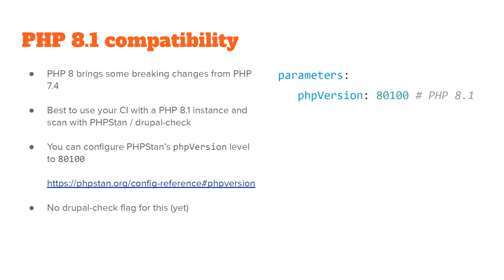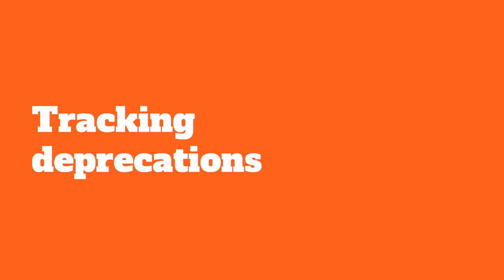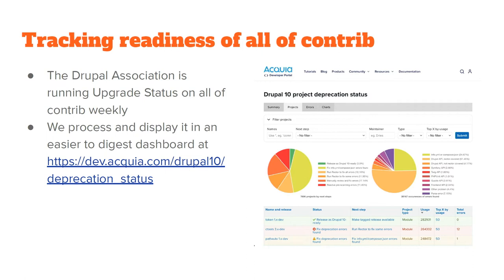For tracking deprecations, we always wanted to know how does the Drupal ecosystem do. The Drupal Association is running Upgrade Status on all contributed projects — thousands of them — every week. It produces an incomprehensible zip file of data, so we take that and make a beautiful, colorful dashboard available at dev.acquia.com/drupal10/deprecation-status. We discontinued running this for Drupal 8 to 9 because those releases were marked unsupported, so now we have it running from Drupal 9 to 10. If you've seen this tool before, there are a lot of good new things to check out.